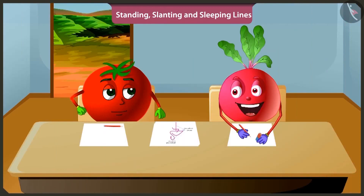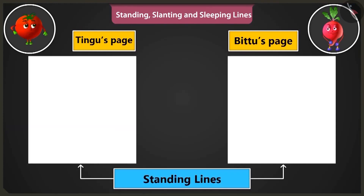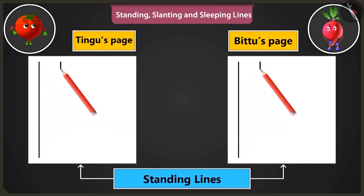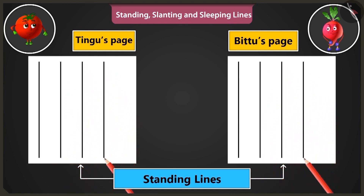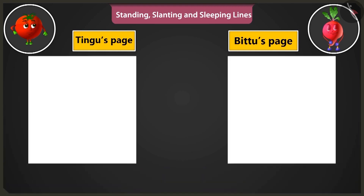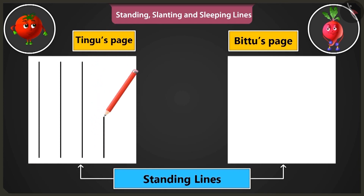It will be fun to learn about so many lines. Will you teach me? Yes. Look. First of all, let's practice making standing lines from the top to the bottom of the page. By practicing to draw such standing lines, we can make straight lines without even using a scale. Now let us practice drawing standing lines starting from the bottom end of the page and move upwards. Okay, let me do it.